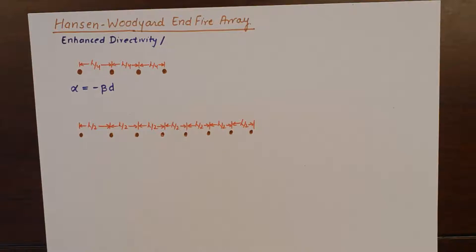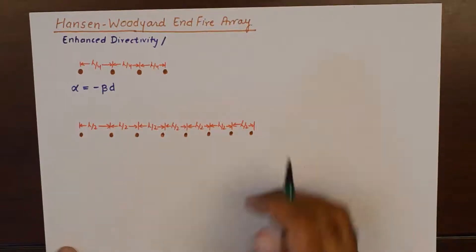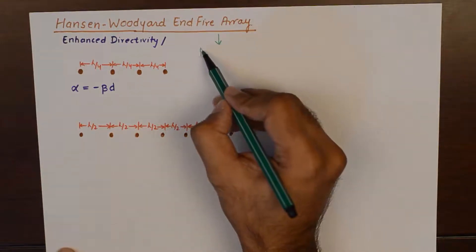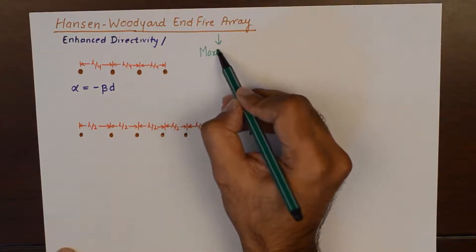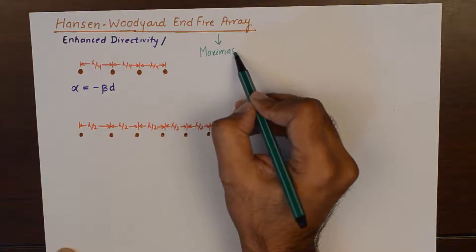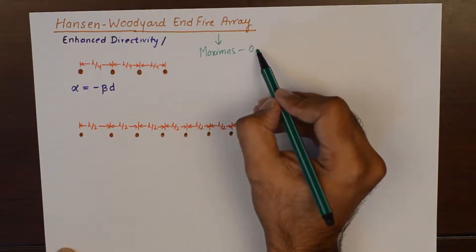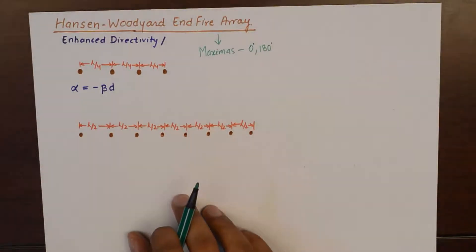Now, before we study Hansen-Woodyard end-fire array, I'd like to mention a few points about end-fire array. The end-fire array used to have maximas in the direction of 0 and 180 degrees. The maximas are not going to change in Hansen-Woodyard also.